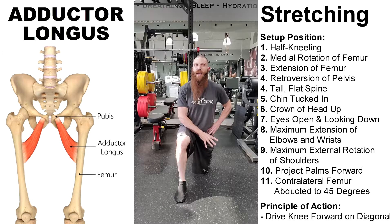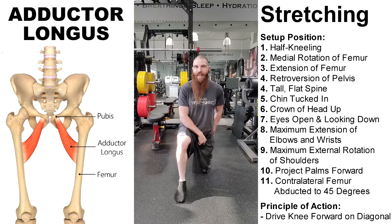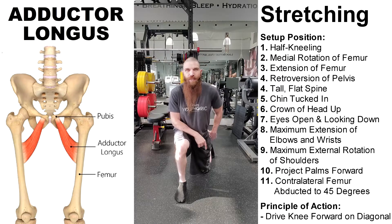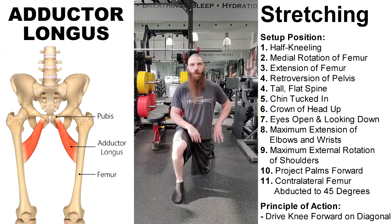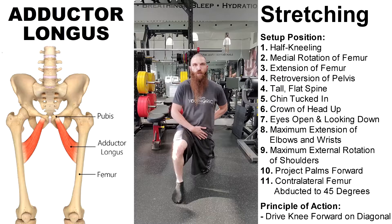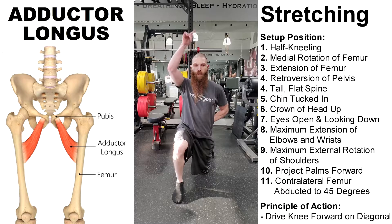Whatever knee is on the ground, that's going to be the adductor longus that we're stretching. We want to start by going into medial rotation of the femur by taking the ankle outside of the knee. Then we're going to go into extension of the femur by dragging the pelvis forward. We're going to maintain a retroversion of the pelvis — flat lumbar spine, flat thoracic, chin is tucked in, the crown of the head pushing up toward the sky.